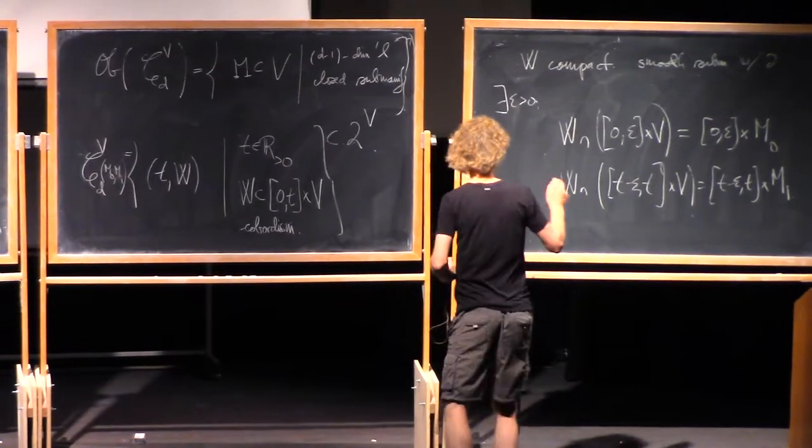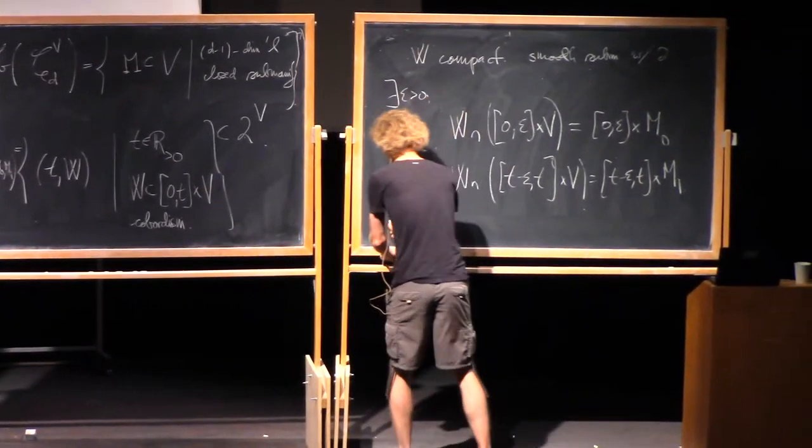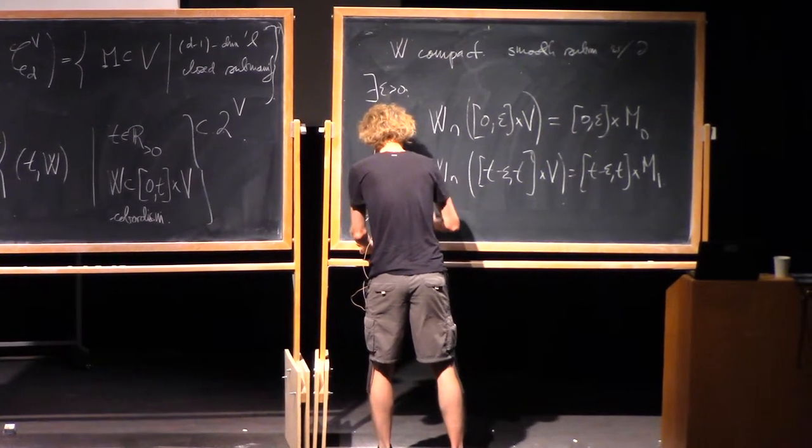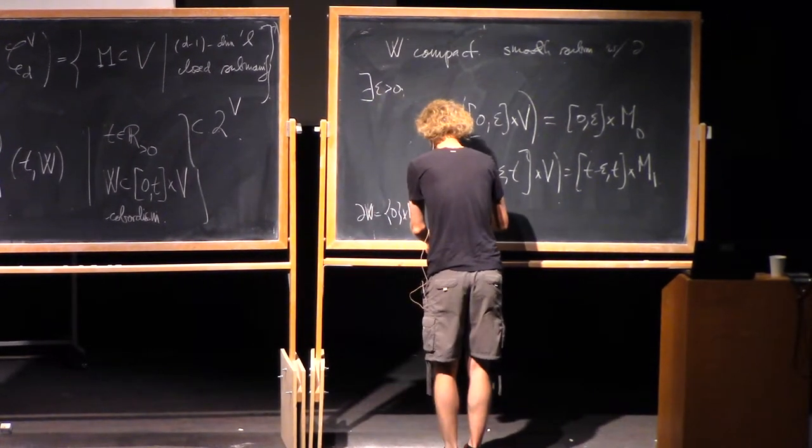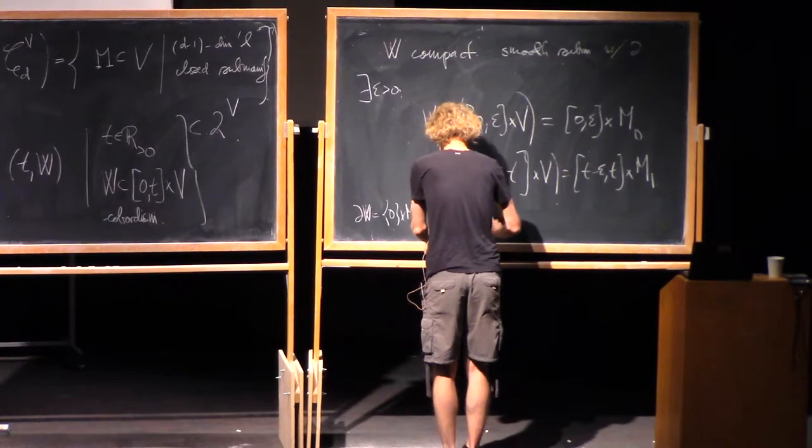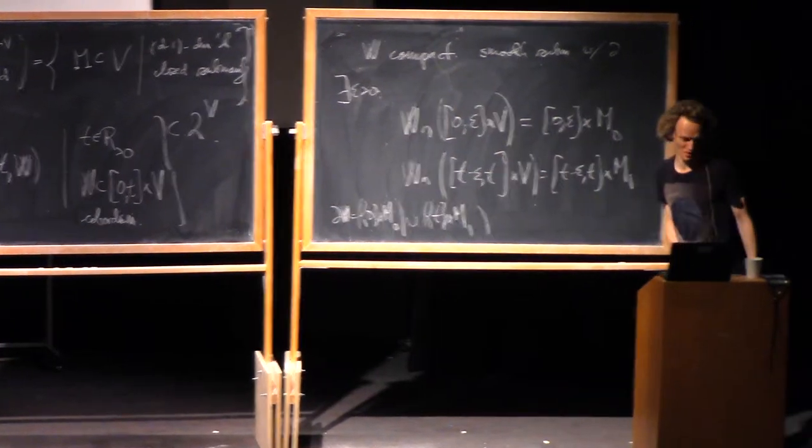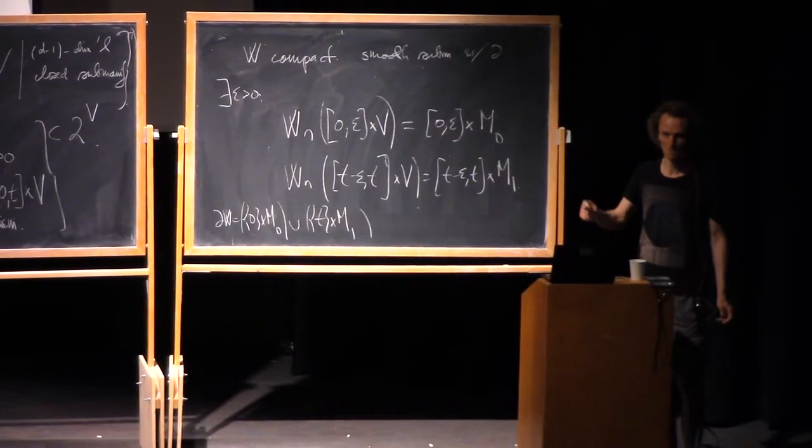And then the boundary of w should be equal to zero cross M0 union t cross M1. I mean, this has to be boundary, but there can't be any more boundary than that. Are these oriented?